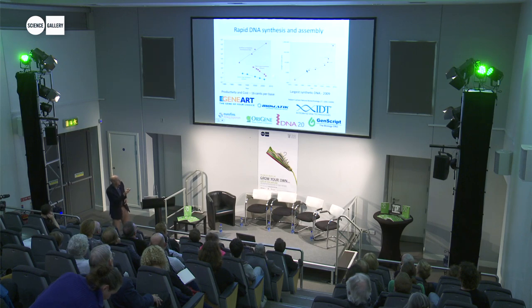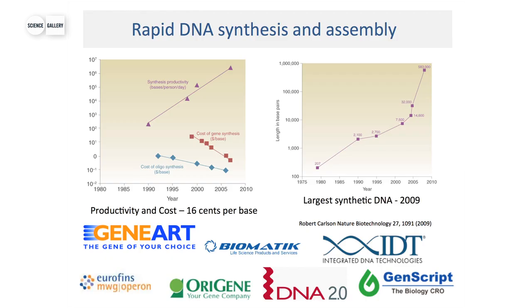So this is the vision — you probably see these Haynes car manuals. The vision is that by 2050, who knows, we will have a complete understanding of all the parts, the DNA code, and everything that goes in to make yeast, E. coli, and mammalian cells work. This is the underpinning vision of the field.